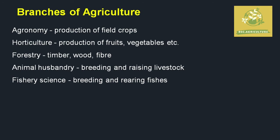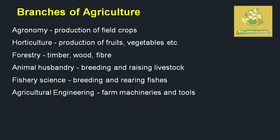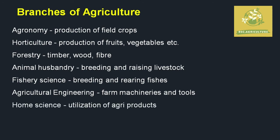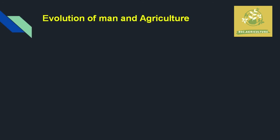Fishery involves maintaining a small pond and raising breeds of fish. Agricultural Engineering is important today as it creates new modern technologies for the farming industry. Home Science involves the conversion of raw materials from the land into finished agricultural products.